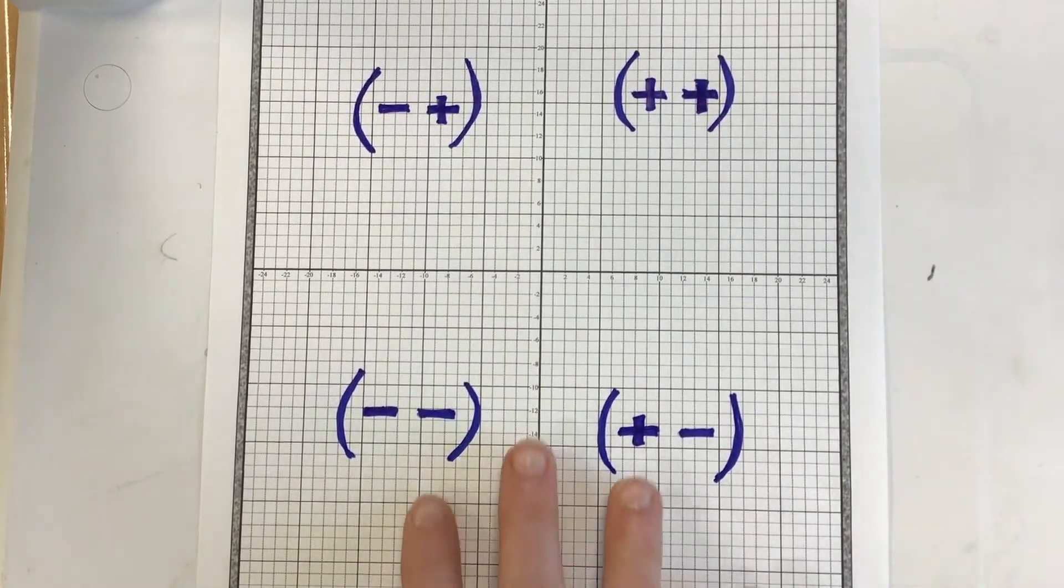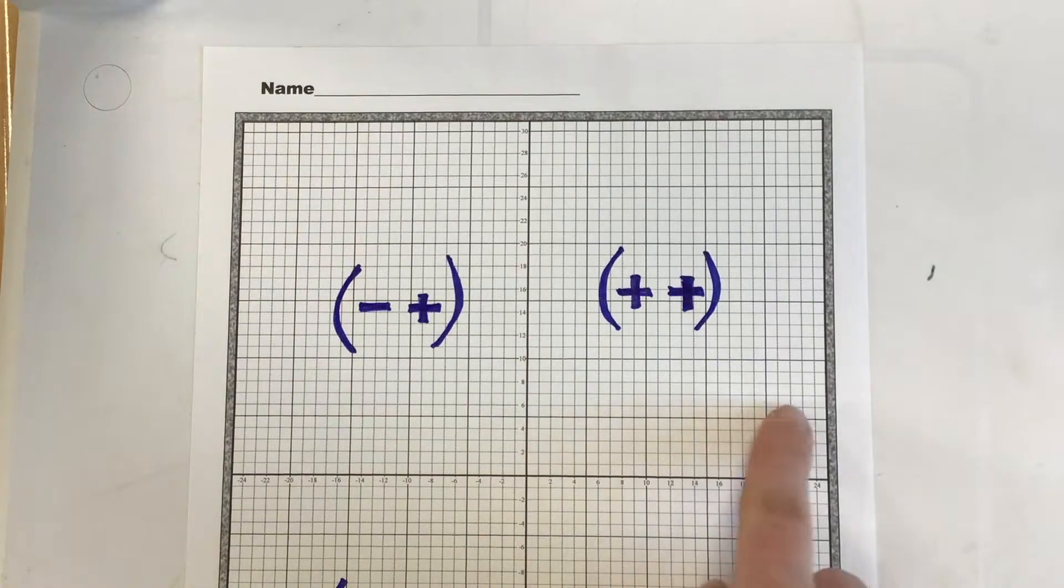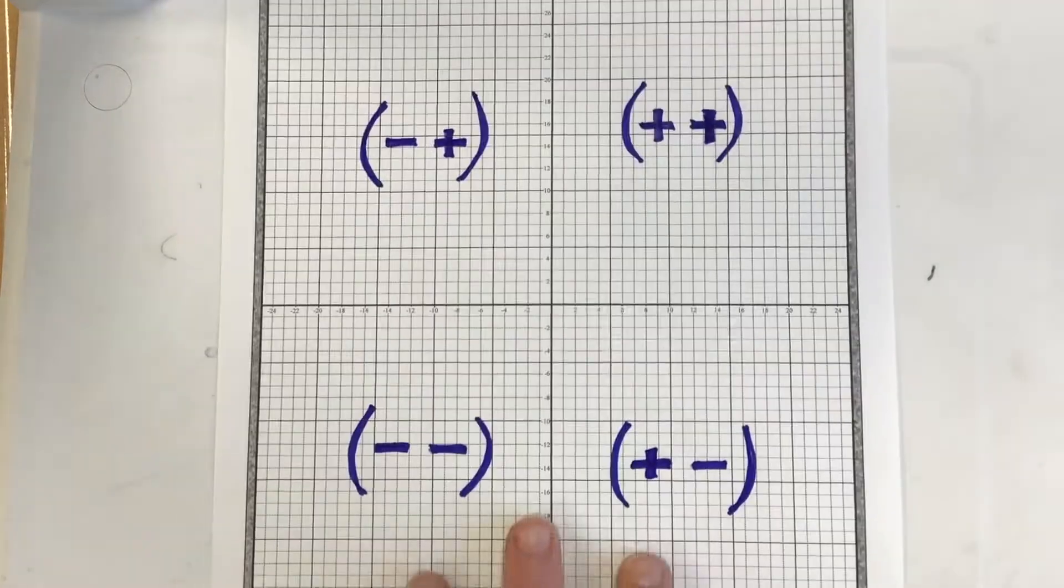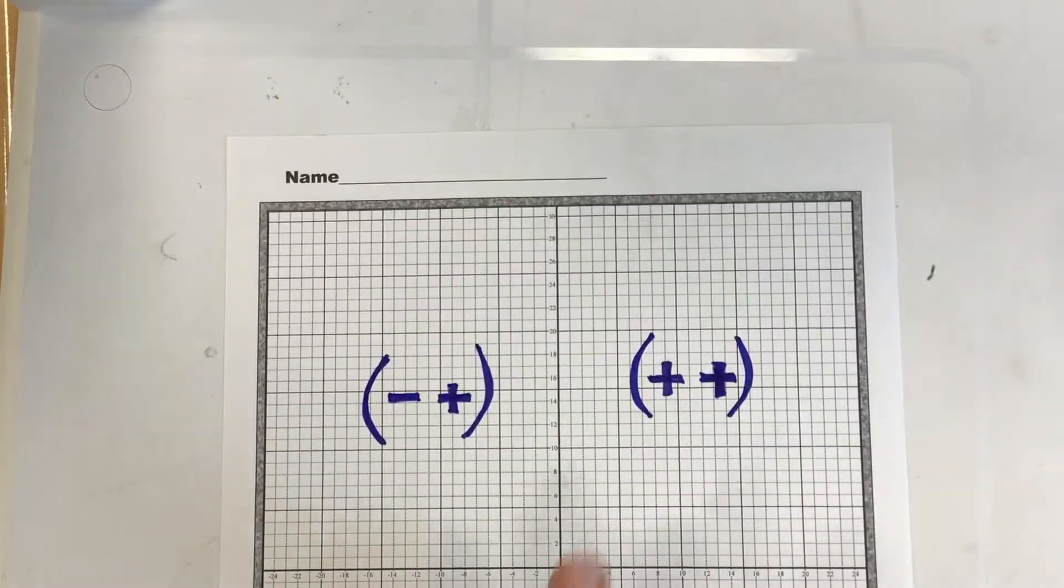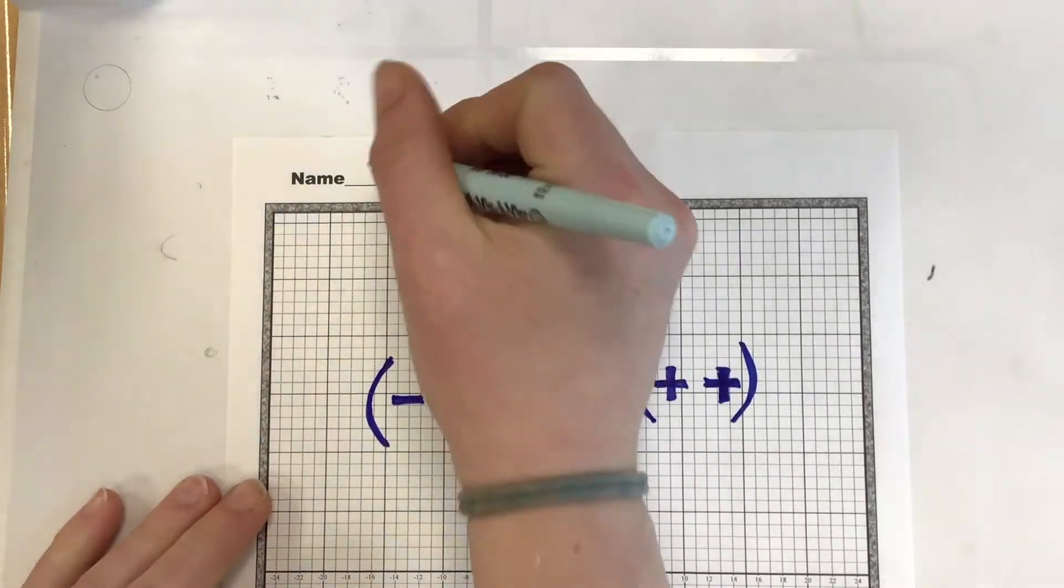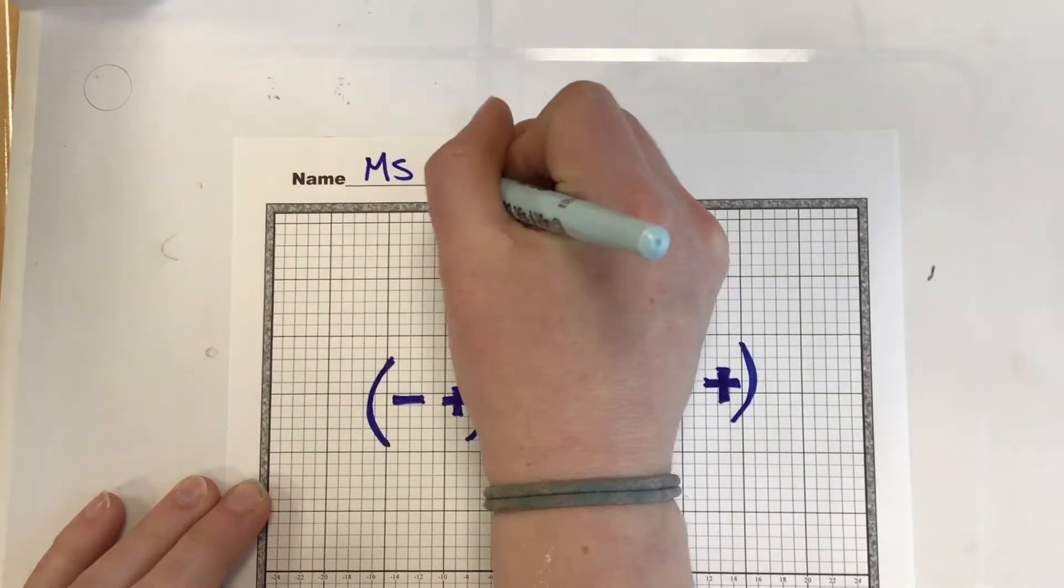We're stepping up our game a little bit. Instead of just working in the first quadrant, we're working with all four this time. So first things first, use graph paper or print out the graph paper I've provided. Definitely put your name on it.